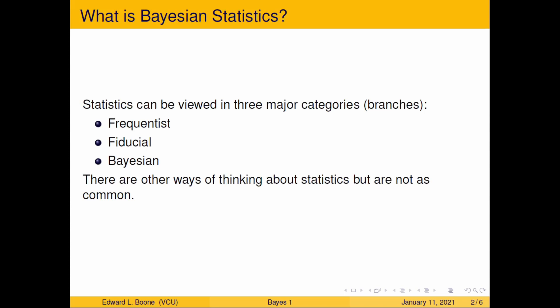First we have to go back and think about what statistics is and some general frameworks. Statistics can be viewed in three major categories — branches. There actually are more but they're more esoteric, so we're not going to talk about them. There's the frequentist, the fiducial, and the Bayesian. Like I mentioned, there are others but they're not that common.